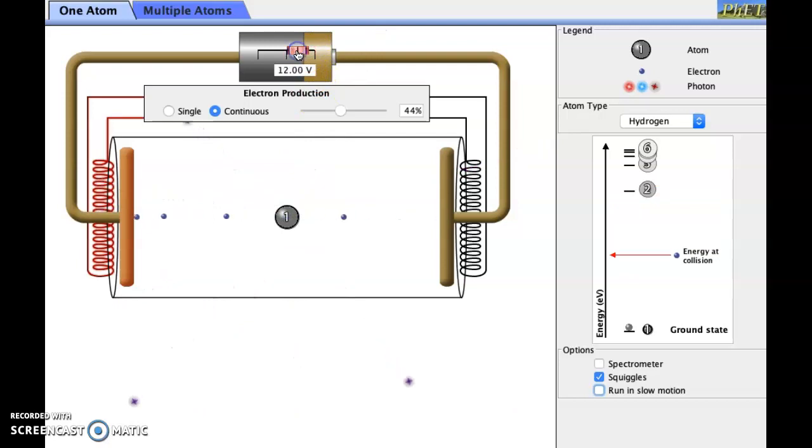I can lower the voltage, decrease the energy at collision. These electrons are being accelerated less through the gap. And notice now nothing happens. The electrons travel straight through the atom.